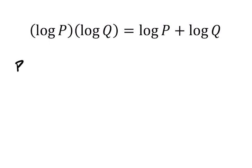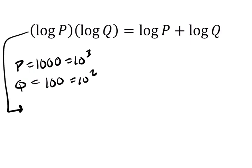We could say P equals a power of 10, let's say 1,000, and Q equals 100. Also, of course, a power of 10. This is 10 to the third, and this is 10 squared.